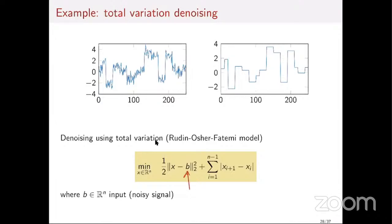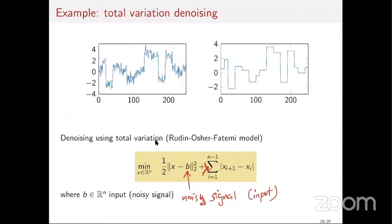B here is the input — that's the noisy signal. There should be a lambda here, a regularization parameter. You minimize the deviation from the noisy signal in L2 norm, where x is going to be the clear signal — your estimate of the clear signal. You minimize a combination of two terms.